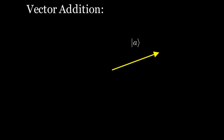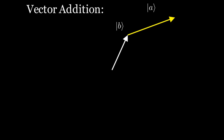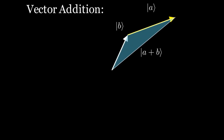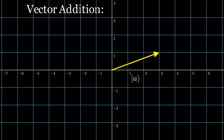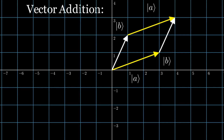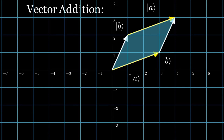Vector addition can be pictured by the parallelogram law. If ket b is drawn so that its initial point is at the terminal point of ket a, then the vector from the initial point of ket a to the terminal point of ket b is ket a + b. We can interchange ket a and ket b to get ket b + a. Since ket a + b equals ket b + a, drawing both constructions with the same initial and terminal points, the two triangles connect to form a parallelogram, with the diagonal representing both ket a + b and ket b + a.